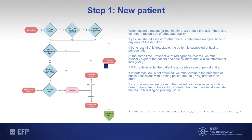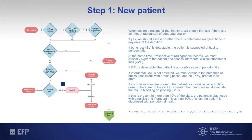If there are no buccal probing pocket depths greater than 3 mm, we must evaluate the patient for full mouth bleeding on probing. If this is present in more than 10% of the sites, the patient is then diagnosed with gingivitis. If present in less than 10% of the sites, the patient is diagnosed with periodontal health.